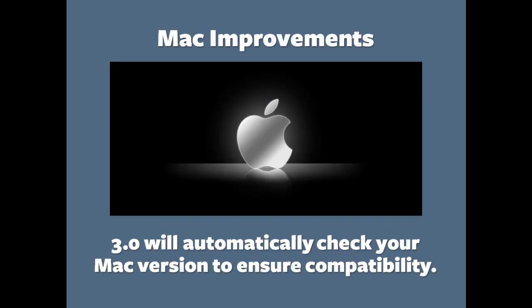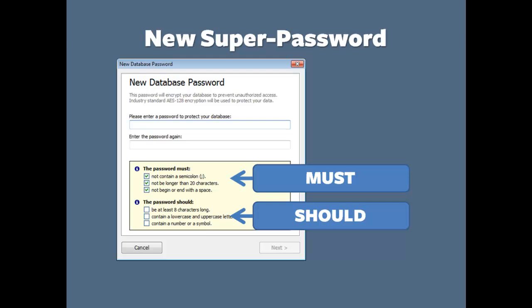First, if you're a Mac user, just want to let you know that there's been some great improvements in the Mac versions over the last eight months or so, and also 3.0 when you download it is actually going to check your Mac to make sure that it can run 3.0. When you create your new database in 3.0 or upgrade your database, it's going to walk you through a database password process so that you can create a secure password. A lot of organizations are concerned about the security of their confidential donor data and want to protect that on your laptop or in the cloud, so there's a new encrypted password structure that will walk you through.